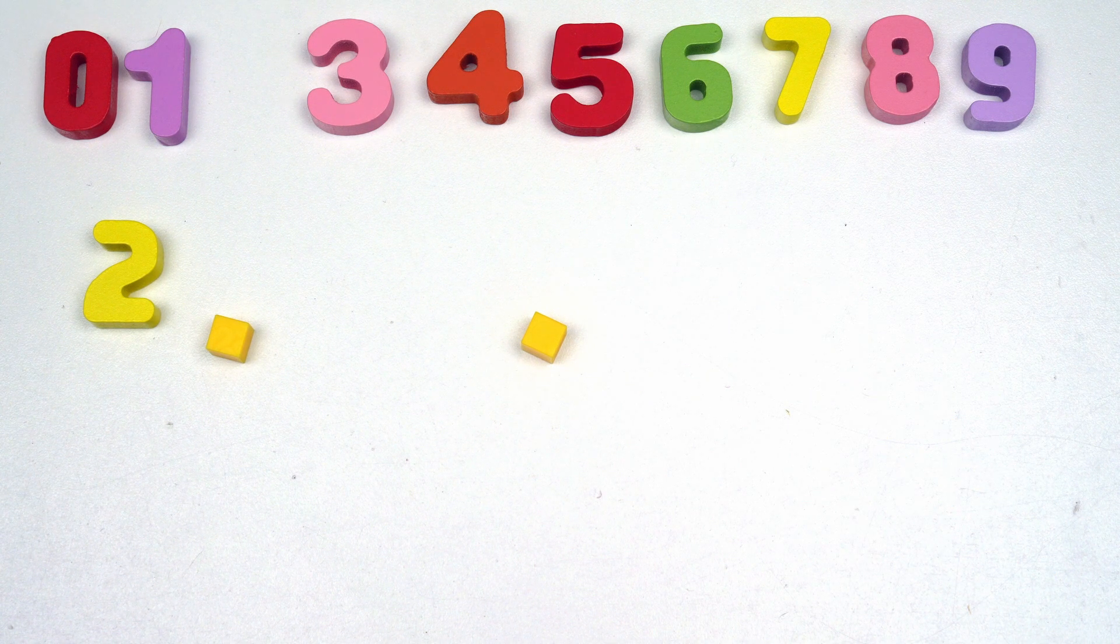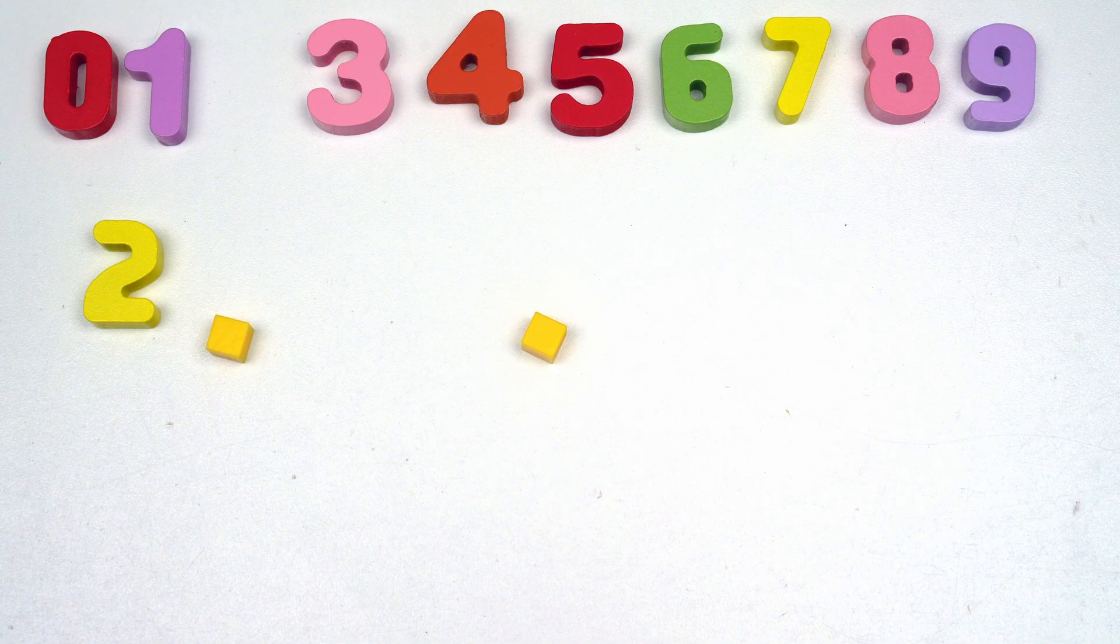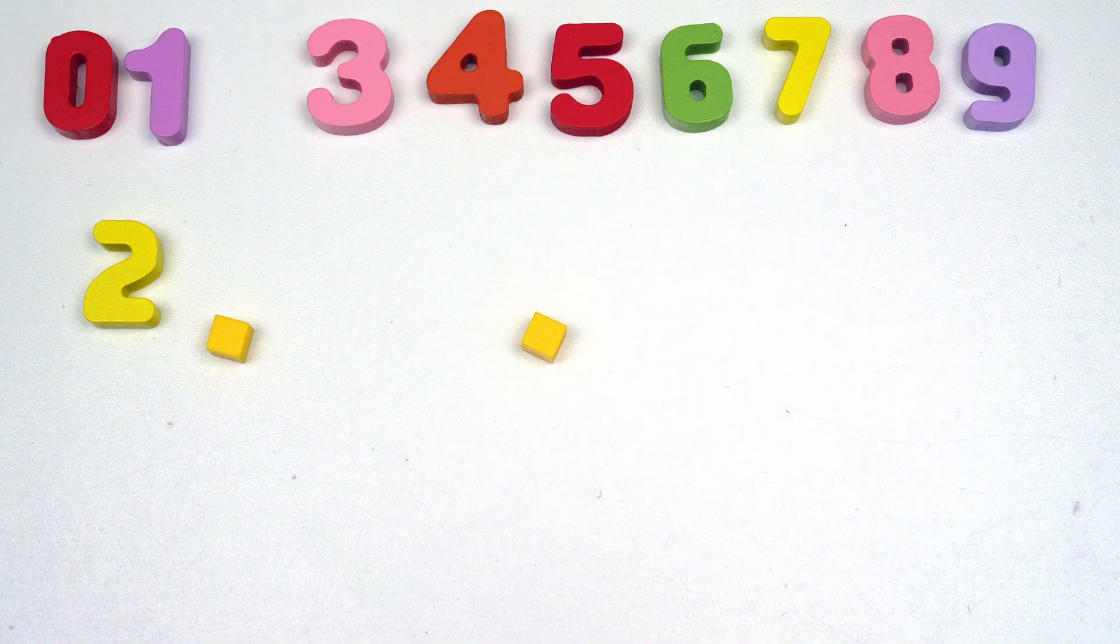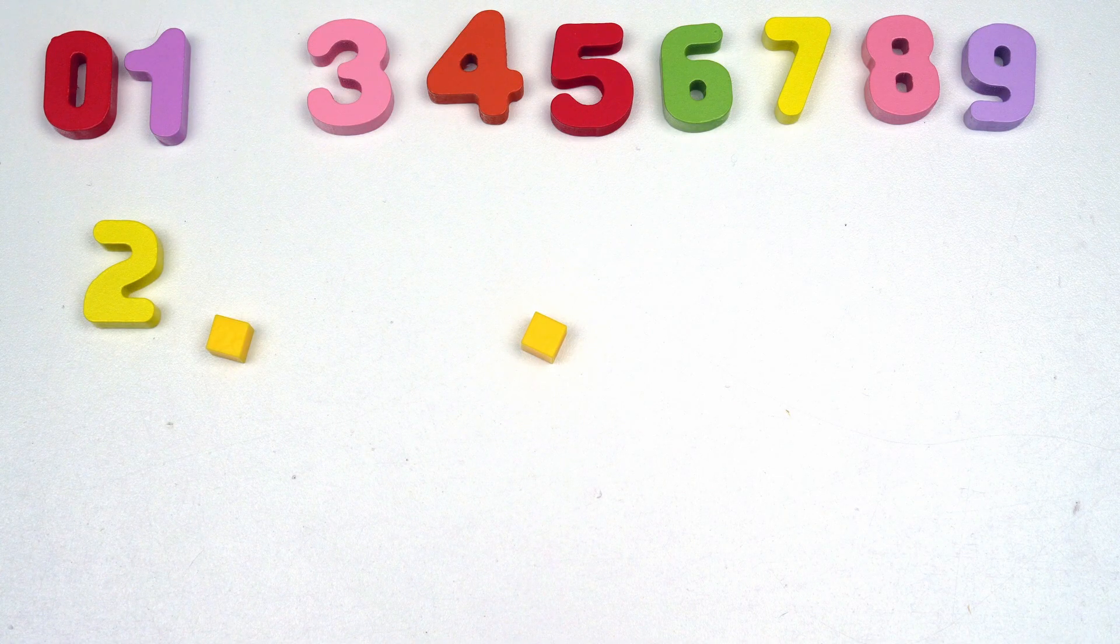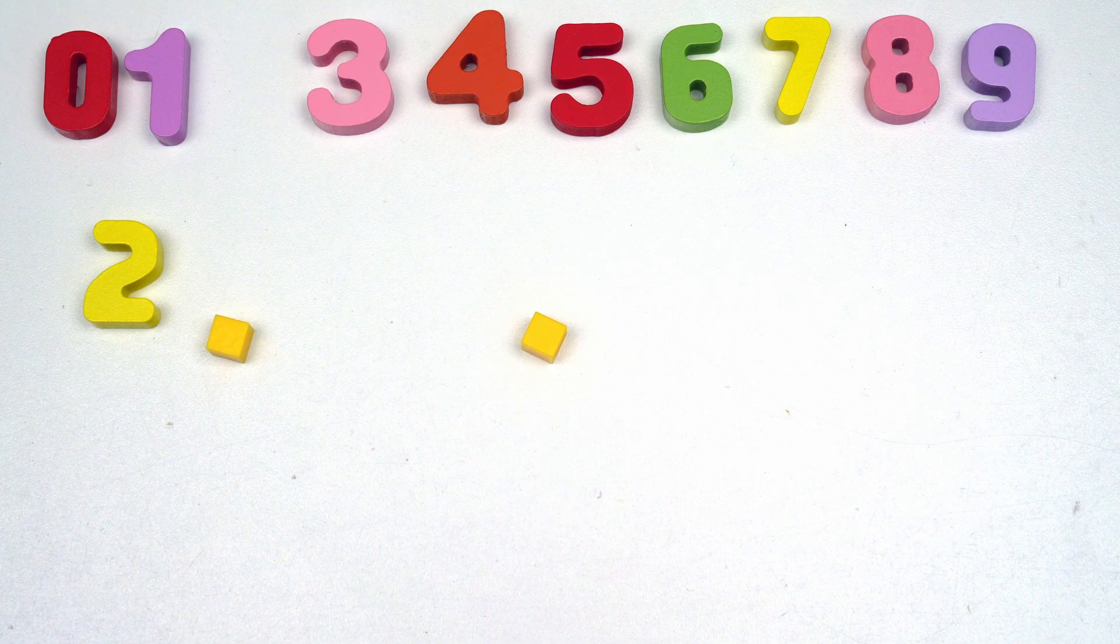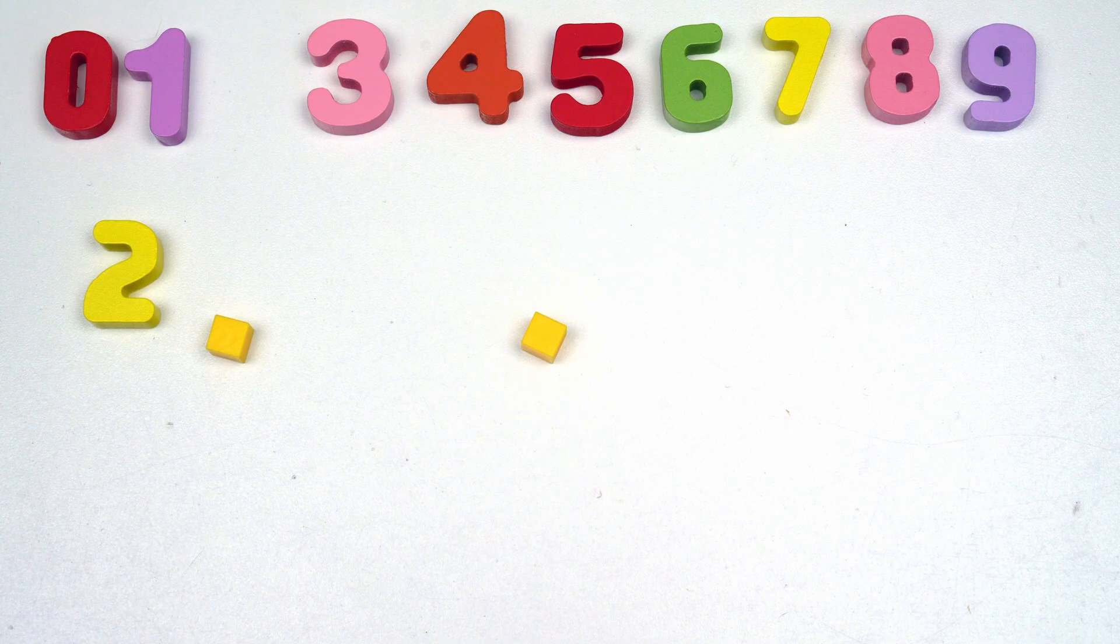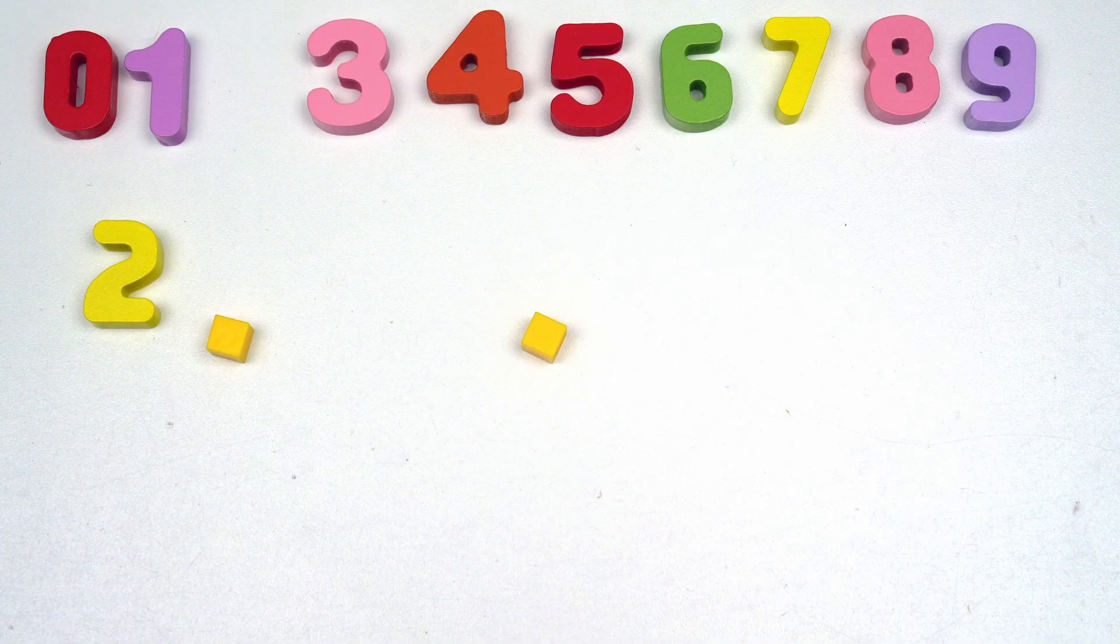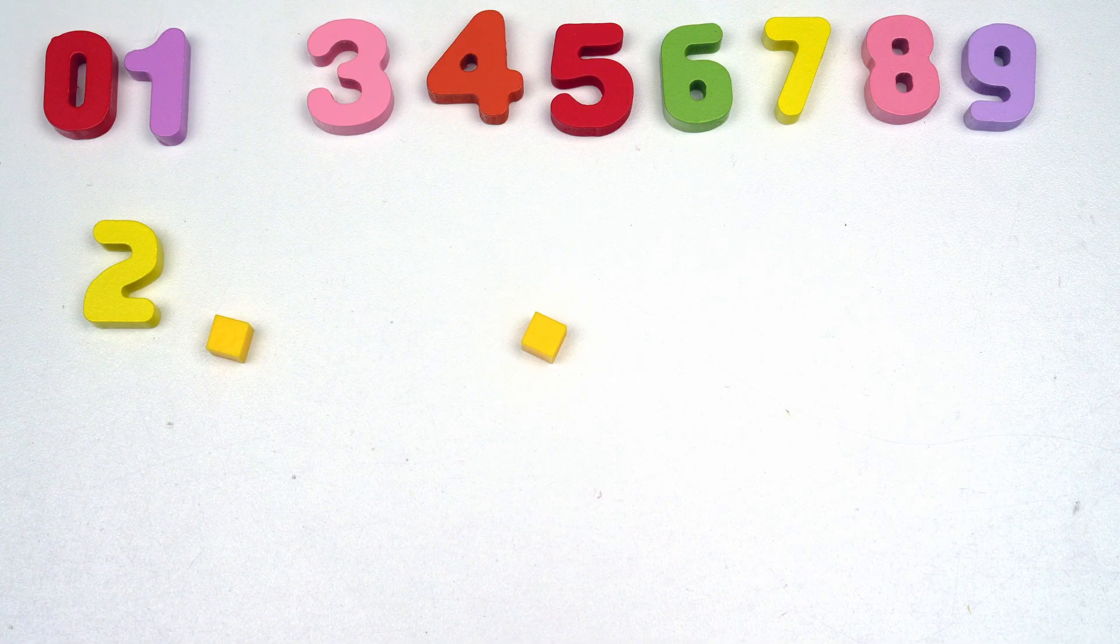So remember, the whole number is the big number. The parts are the smaller numbers that make up the whole. And together, those three numbers make up a number bond. Keep practicing. Soon you'll see number bonds everywhere. And they'll help make adding and subtracting so much easier. Bye-bye.